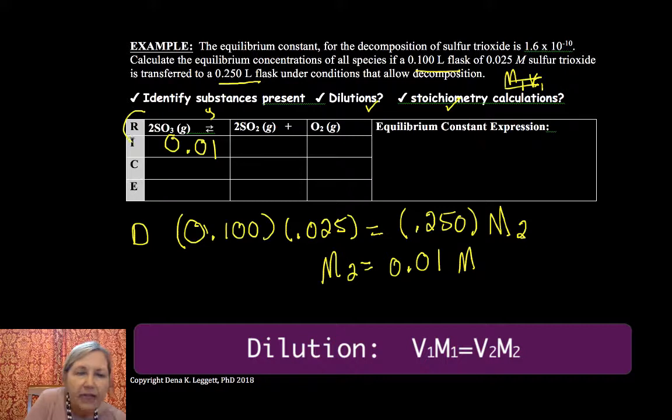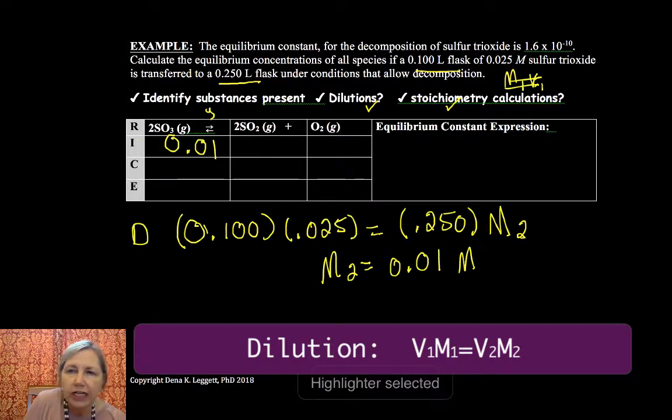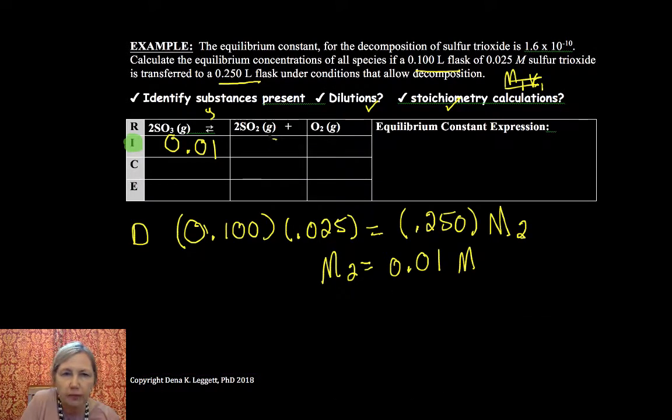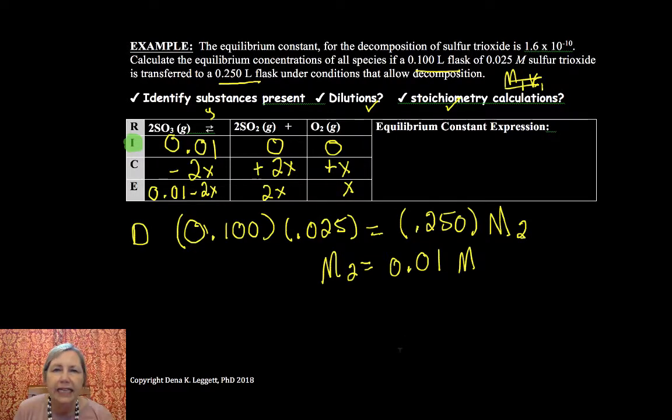Now when you do dilutions and stoichiometries, that information in your RICE table is going to feed into your initial value here. So once you do those dilutions and stoichiometries, they're helping us get to our starting points. Minus 2X, plus 2X, plus X. Okay, this time we're given the equilibrium and I'm gonna go ahead and fill out my whole table. 2X and X, and things decompose, and I have to find the equilibrium concentrations of each species.